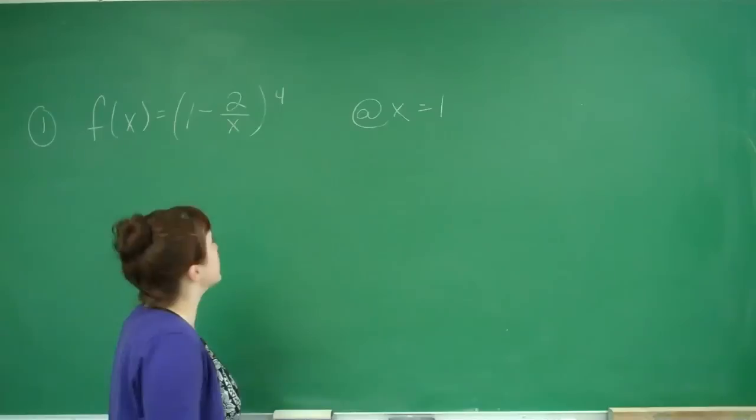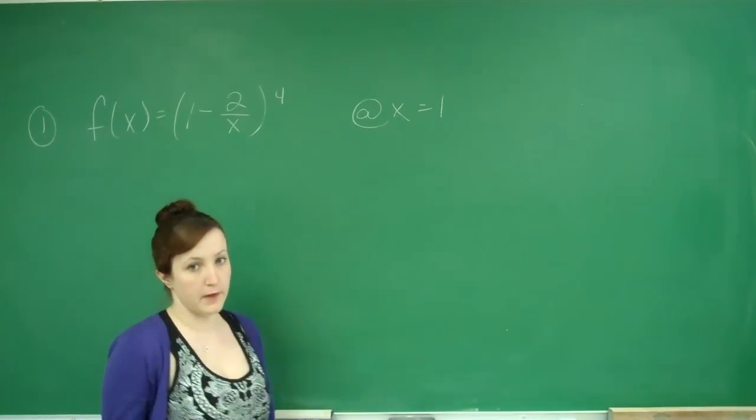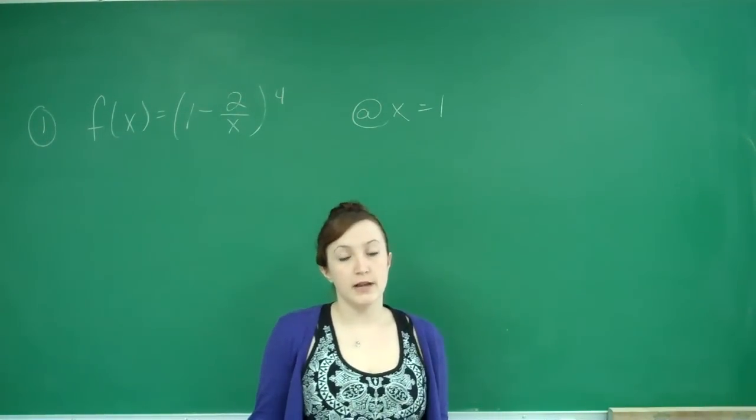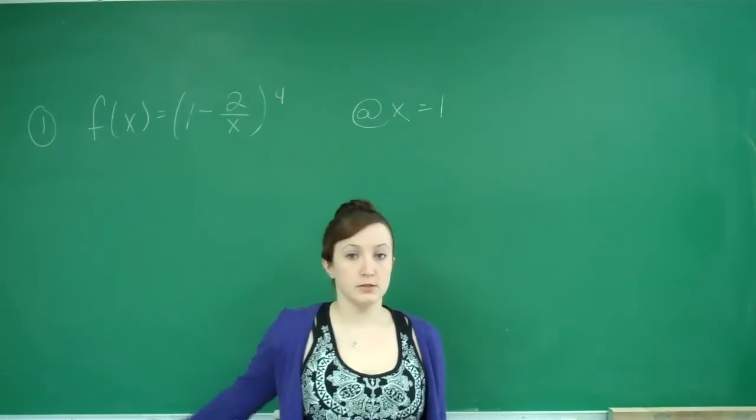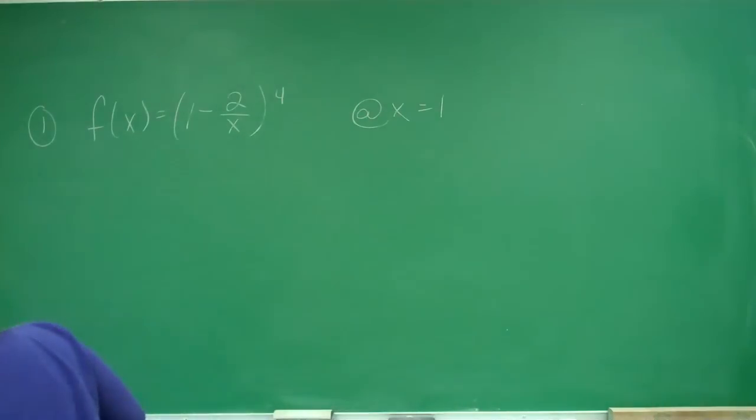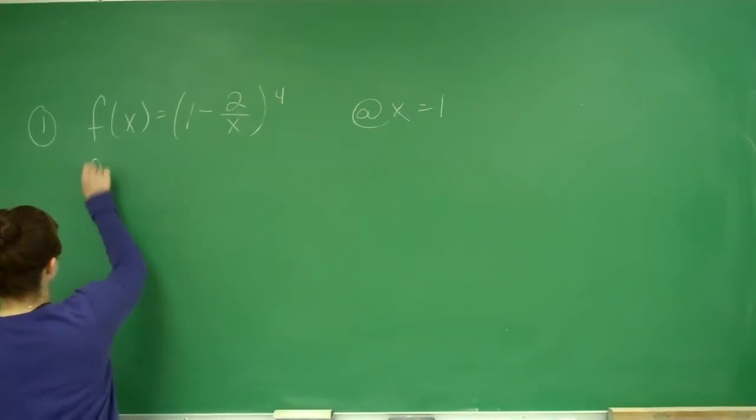First we need to find the derivative of f(x) because we know for a line to be tangent, it must have the same slope as the function. The slope is the same thing as the derivative, so we're going to find f'(x) using our rules.